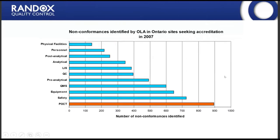This slide shows a study done on some Canadian labs, highlighting non-conformances identified during their accreditation process. You can see the analytical section, errors with point-of-care testing, and issues within the quality management system itself. From this one picture, there are a lot of non-conformances that can be identified within the laboratory setup, and we want to try to limit these as much as possible so that there is no impact on the patient.